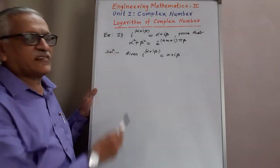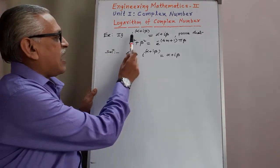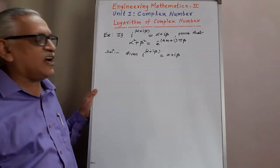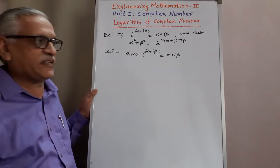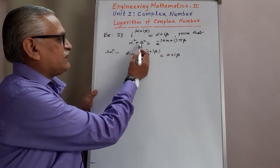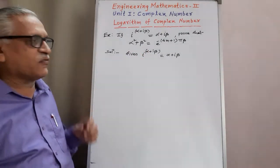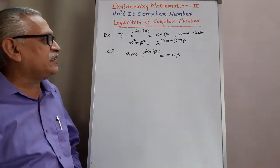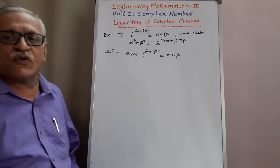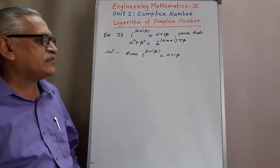Let us see that example. If i raised to alpha plus i beta is equal to alpha plus i beta, then prove that alpha square plus beta square is equal to e raised to minus, in bracket 4m plus 1 times pi beta.